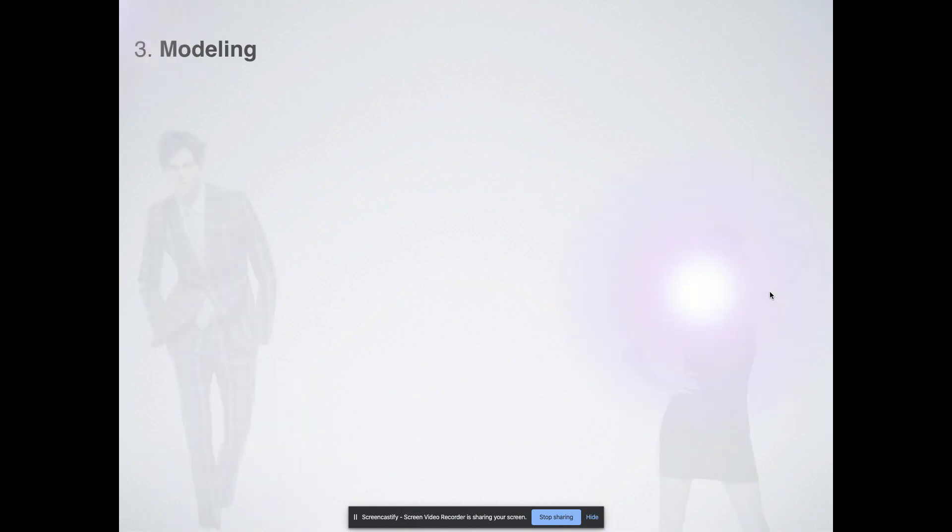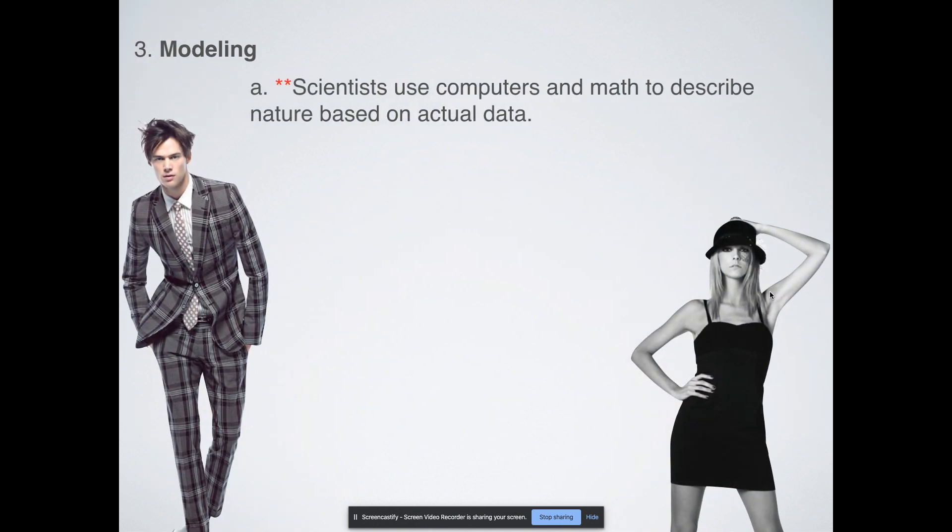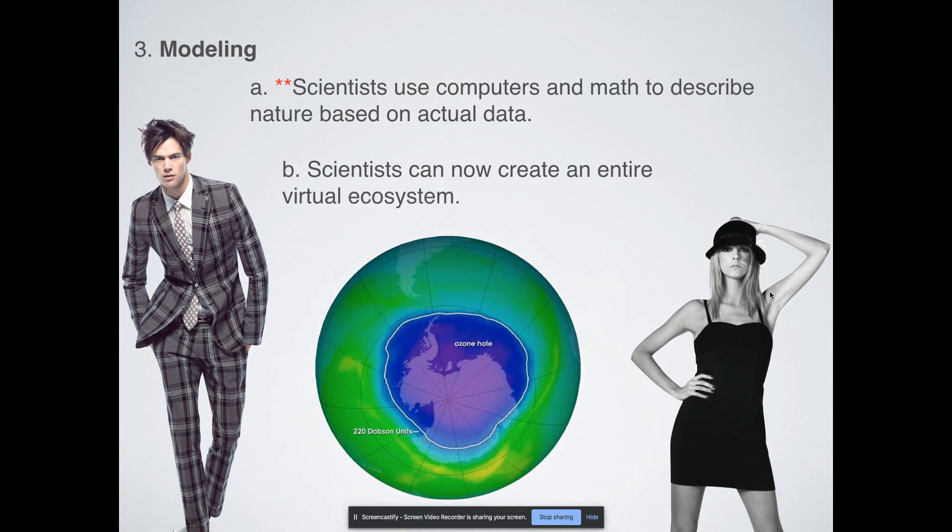And then last but not least, we can model things. We're not talking about fashion, but using math to describe nature based on actual numbers and actual data. You can create virtual ecosystems, gigantic computer-based systems that can run simulations that let you know, if this trend continues, here's where this will go in the future. Here's an example of a hole in the ozone layer that had been modeled. The different colors represent the different amounts of ozone. If you are looking at a model at a computer, you can very easily say, continue the simulation at this rate, and if it continues, here's what it would look like in the future.